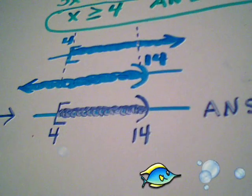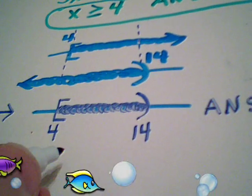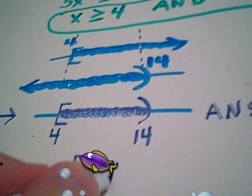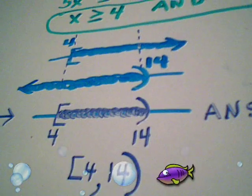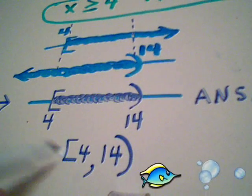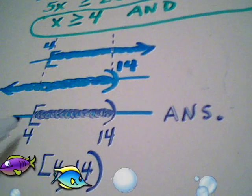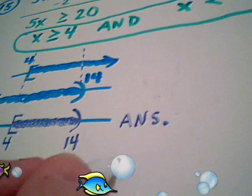If I write it as bracket 4 comma 14 open paren, that answer is written in interval notation. And notice this is a sandwich, right? Numbers between 4 and 14.